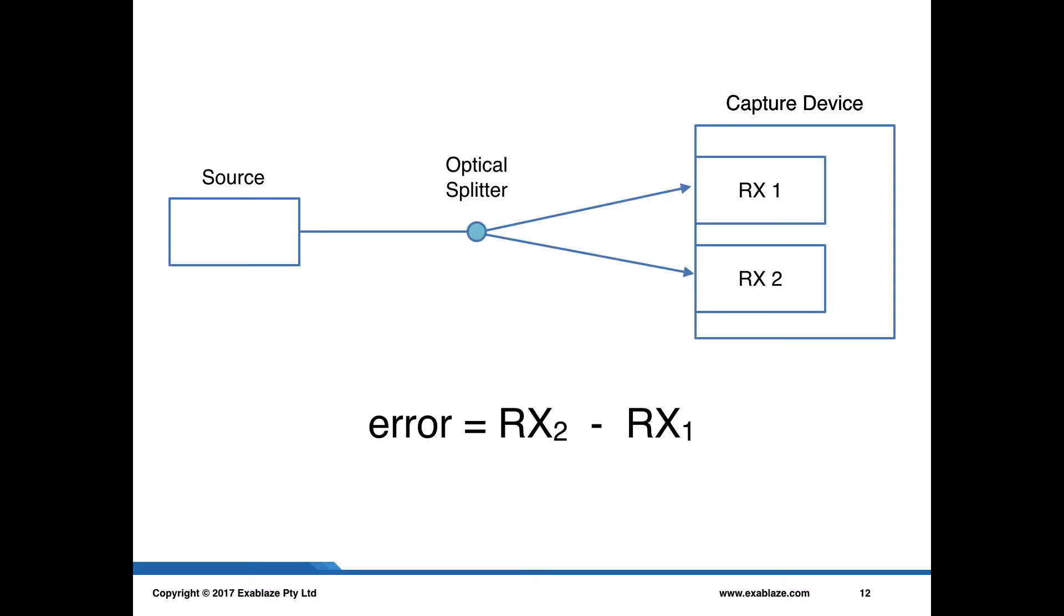On the slide here, we have a representation of our measurement rig that we used in the previous experiments. The problem with this rig is that it assumes that the optical splitter itself is perfectly symmetrical. Optical splitters are actually fairly large devices, and there's no real way to verify that assumption. So it's quite possible that there's some sort of path deviation that goes on inside of the optical splitter, which may come back to bite us when we're doing picosecond scale measurements.